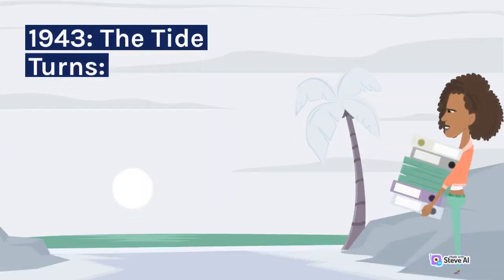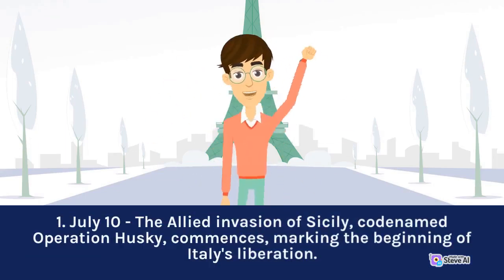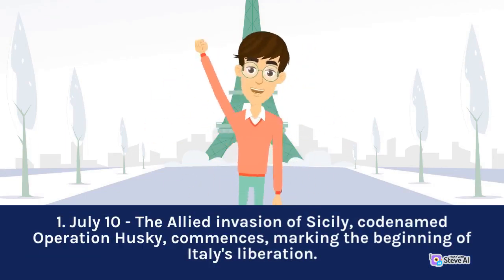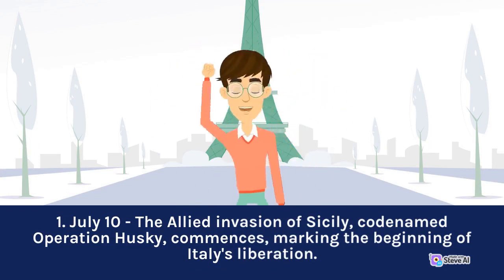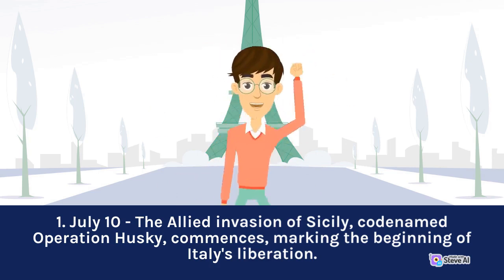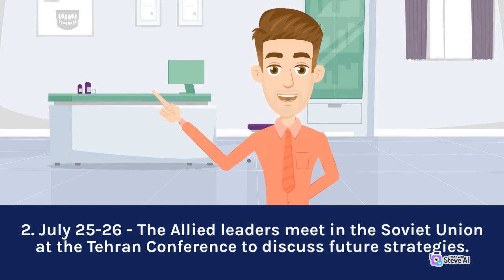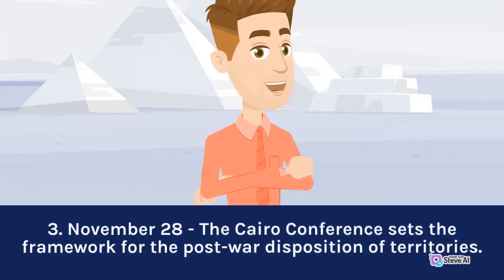1943 — The Tide Turns: July 10, the Allied invasion of Sicily, codenamed Operation Husky, commences, marking the beginning of Italy's liberation. July 25–26, the Allied leaders meet at the Tehran Conference to discuss future strategies. November 28, the Cairo Conference sets the framework for the post-war disposition of territories.